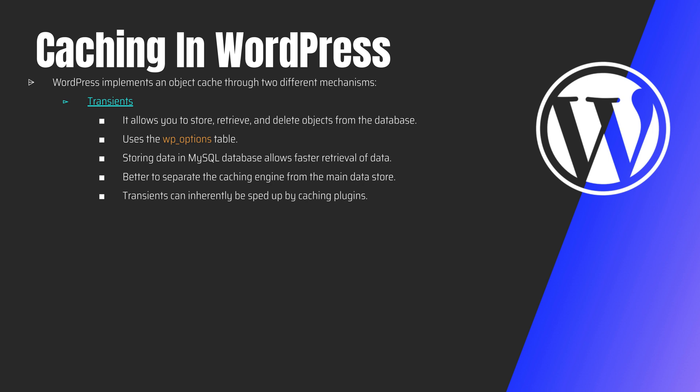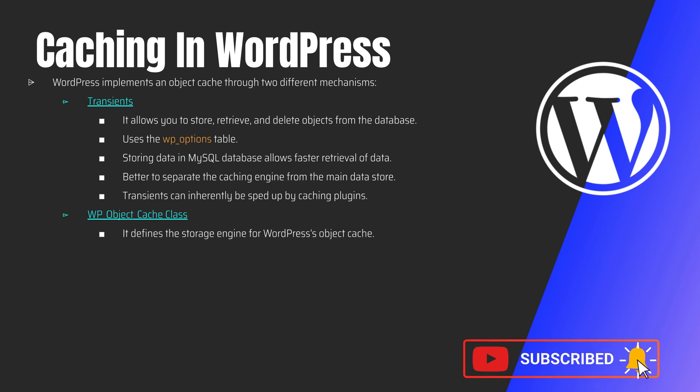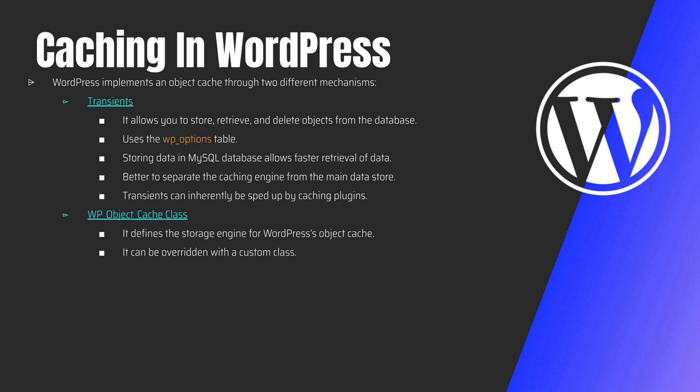The WP_Object_Cache class defines the storage engine for the WordPress object cache. By default the cache is not persistent, but it can be overridden with a custom class by configuring WordPress to use storage engines such as Memcached and APC. Using plugins to override WP_Object_Cache and implement caching gives you more control over the caching engine compared to using the Transient API.